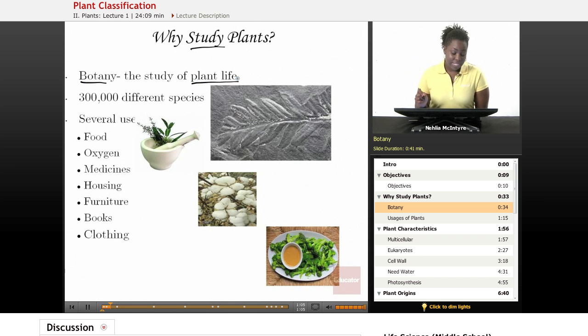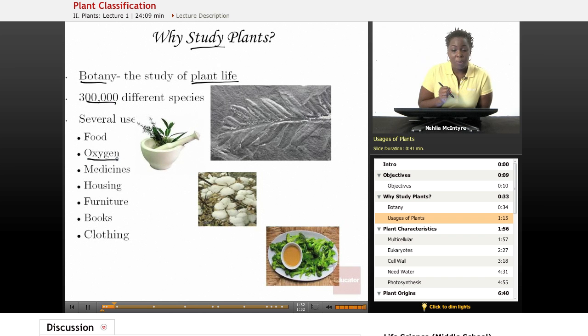All in all, scientists have been able to name, identify, and describe over 300,000 different types of plant species. Plants are obviously so important to life. Without plants, we wouldn't be able to live as humans because they provide what we need in order to breathe, which is oxygen. But when I think about plants, I think that they're also so important to us because they provide our primary food source. Plants are also used for medicines, housing, furniture, books, and clothing. You can probably think of several ways that plants have contributed to your life on a daily basis.